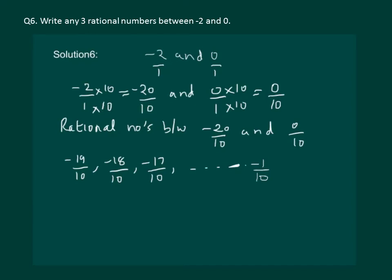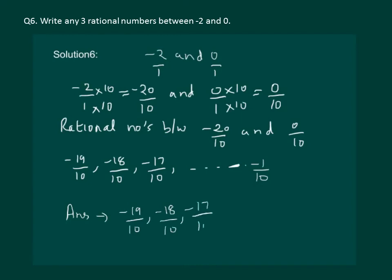But we only have to write any 3 rational numbers between minus 2 and 0. All these numbers are rational numbers that lie between minus 2 and 0, so we can write any 3 of them in the answer. We write: minus 19 by 10, minus 18 by 10, and minus 17 by 10 lie between minus 2 and 0.